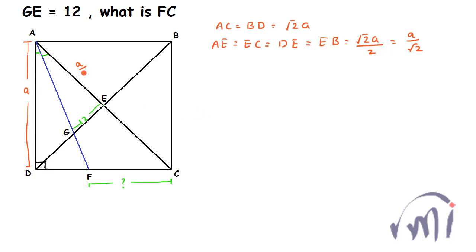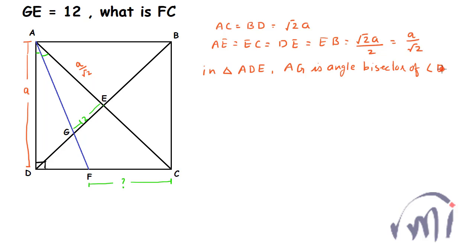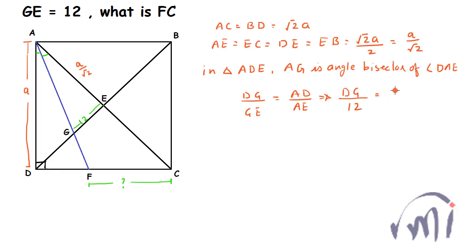All of them will be equal to root 2·A divided by 2, or A divided by root 2. So AE is equal to A divided by root 2. Since AF is an angle bisector, in triangle ADE, AG will be an angle bisector of angle DAE. According to the angle bisector theorem, the angle bisector divides the third side in the ratio of the sides containing the angle. That means DG divided by GE equals AD divided by AE, or DG divided by 12 equals A divided by (A divided by root 2). So DG will be equal to 12 root 2.